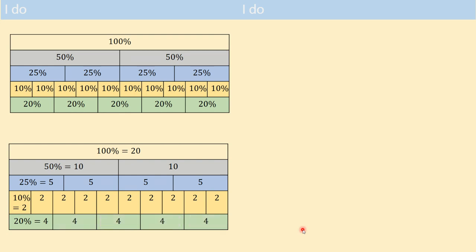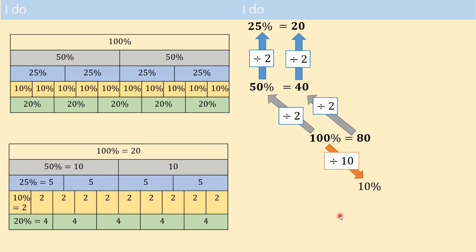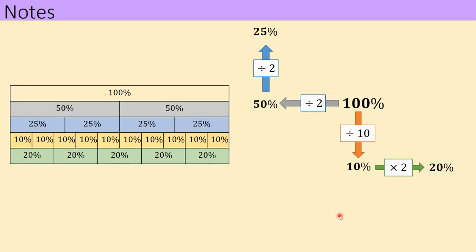Pause the video if you'd like to take any notes. We can use this bar model to help with a different question. If we wanted to work out 50% of 80: to get from 100% to 50% we divide by 2, which means we also divide 80 by 2. For 25% we divide 50 by 2, which also gives us 20. To get 10% we divide by 10. This should be bringing back memories from primary school — year four or five. That question is going to be in your MCQ, so pause the video now to take notes.